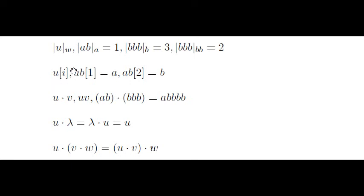In this way we denote the symbol at position i of a word u. For example, ab has an a at position 1, and a b at position 2.